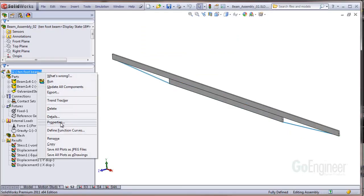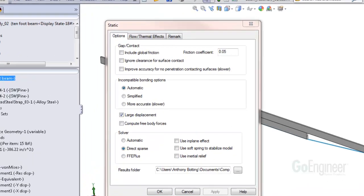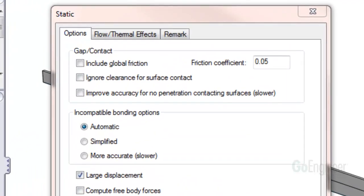The way to fix this is use the large displacement option in the properties of the study. This large displacement switch causes the solver to increment the loads very gradually in steps.